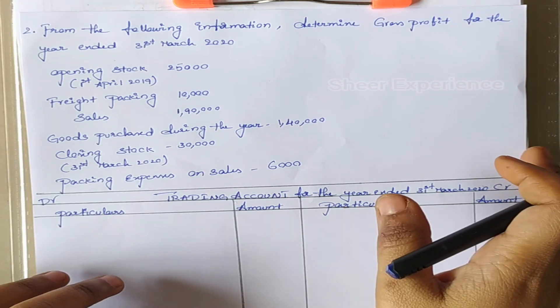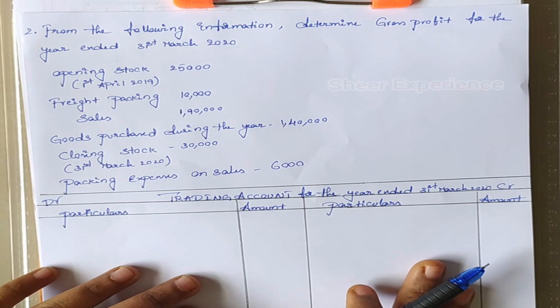Our next problem: from the following information, determine gross profit for the year ended 31st March 2020. Opening stock: 25,000. Freight and packing: 10,000. Sales: 1,90,000. Goods purchased during the year: 1,40,000. Closing stock: 30,000. Packing expenses on sales: 6,000. Here we see a date next to the opening stock. Sometimes they just give 'stock' with the first day of the month as the date — in this case we should consider it as opening stock. If they give the end day of the month next to the stock, we should consider it as closing stock.